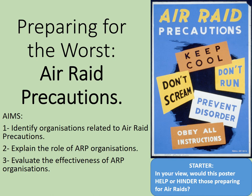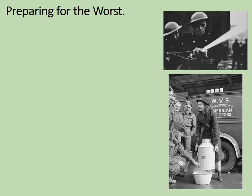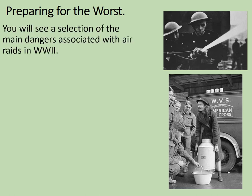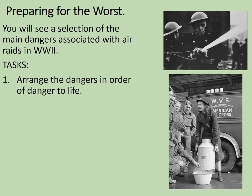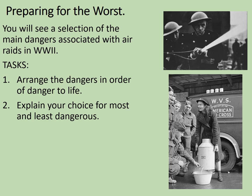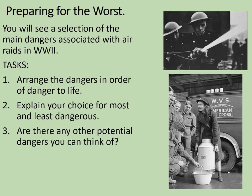Let's have a look at what ARP organisations there were. Here we see some photographs giving hints about what some of the ARP organisations were about: the Fire Brigade and the Women's Voluntary Service. First we need to consider the dangers they were facing. You'll see a selection of the main dangers associated with air raids in World War Two. Your tasks will be to arrange the dangers in order of danger to life, explain your choice for most and least dangerous, and consider any other potential dangers.